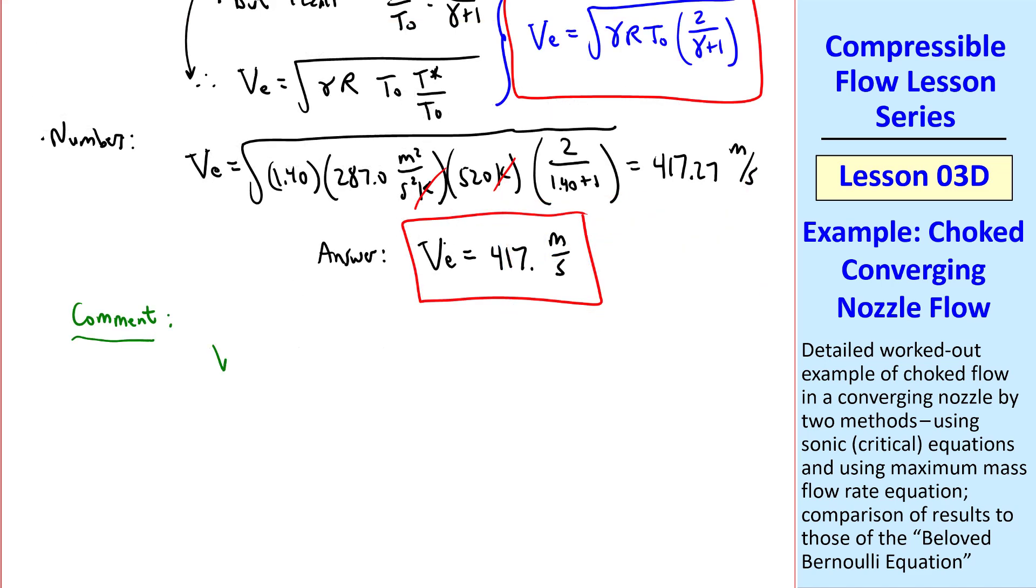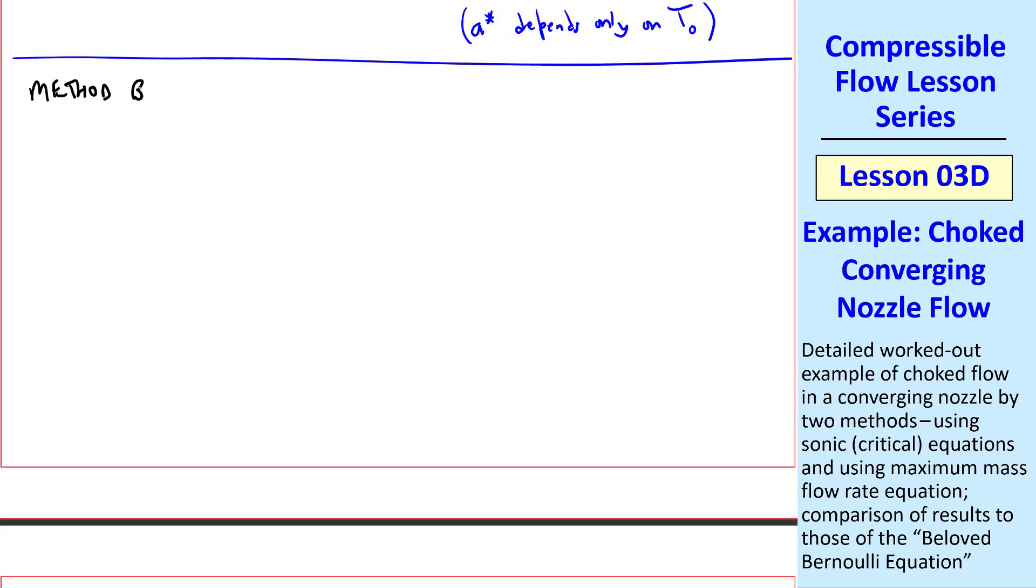One comment here. Exit speed VE depends on T0, as we see in this equation, and on R and gamma, of course. But it doesn't depend on P0. You might think that as P0 increases, VE would increase. But P0 never enters in this analysis. This is because the speed of sound depends on T only, not on pressure. And here, since the flow is choked, VE is A star, which depends only on T0, not on P0.